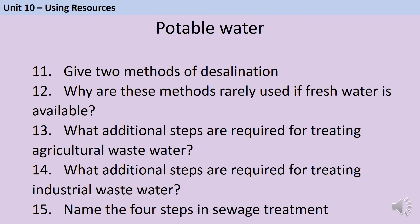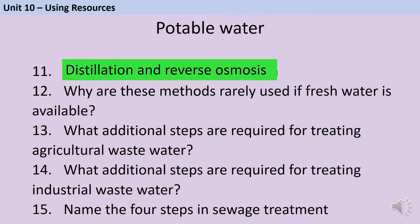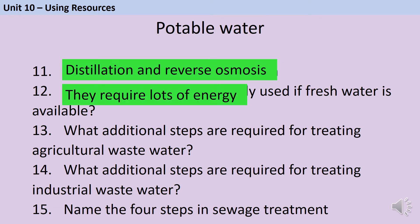Two methods for removing salt from water are distillation, where we heat the water until it evaporates and then condense it back into a liquid, and reverse osmosis, where very high pressure is used to force the water through a partially permeable membrane so that the salt is left behind. These methods are rarely used if fresh water is available because they're both very energy intensive and that makes them very expensive.